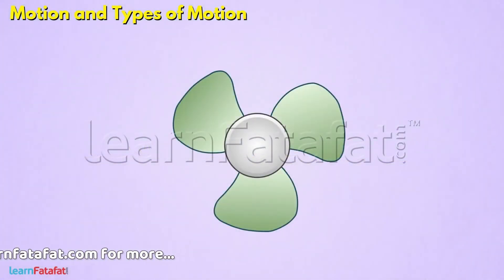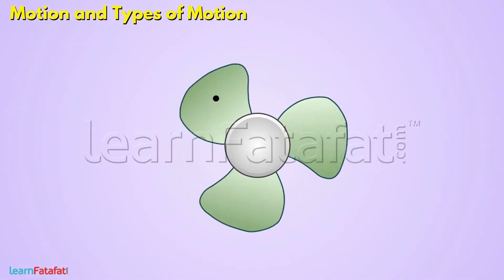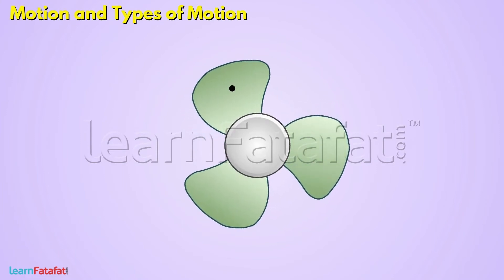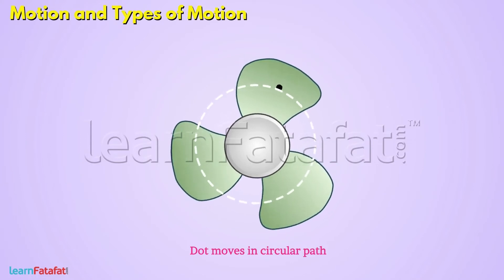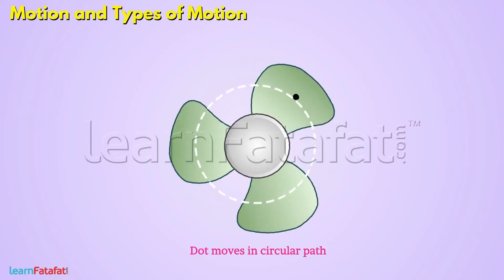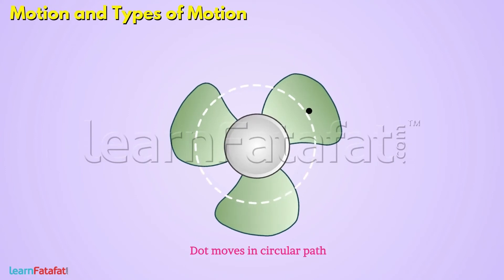Here is a fan. Let's mark a big dot on one of its blades. When we switch on the fan, the dot moves. It does not move in a straight line. In fact, it moves in a circular path such that its distance from a fixed point always remains the same.